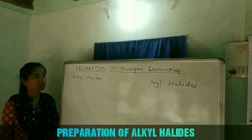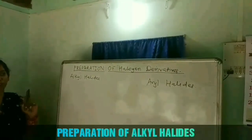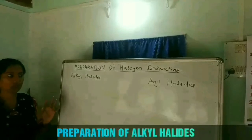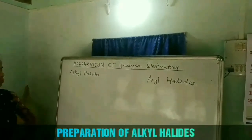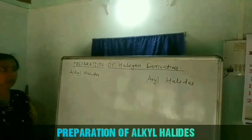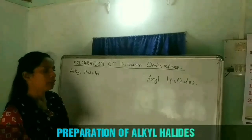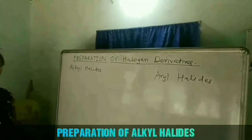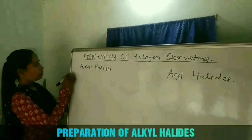Today we are going to discuss the preparation methods of halogen derivatives. First, we will cover the preparation methods of alkyl halides, and then the preparation methods of aryl halides. There are three preparation methods for alkyl halides.